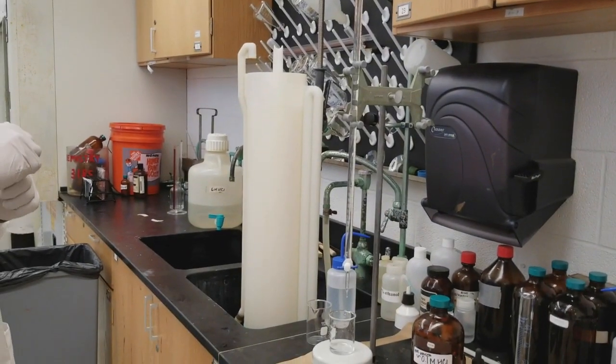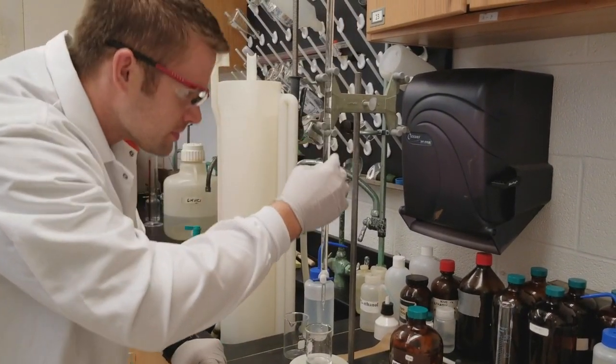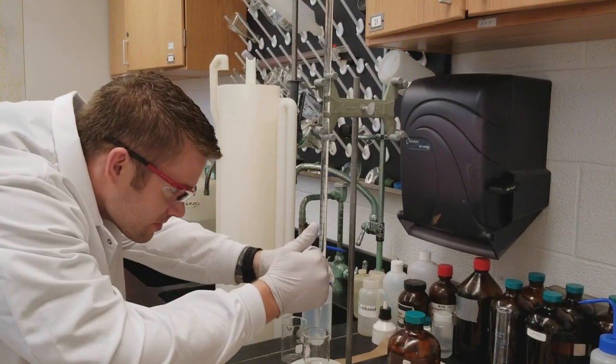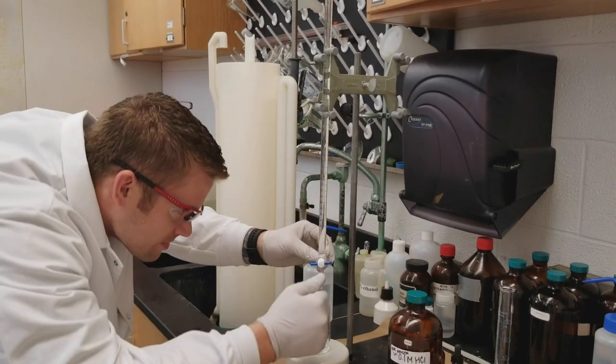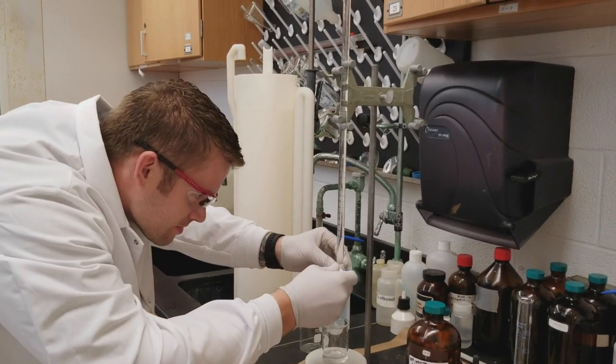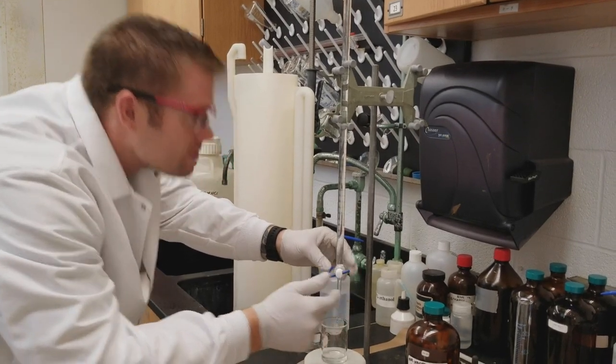And now we want to check the burette for any air bubbles. Those bubbles are going to affect our potential measurements, so we want to check and make sure that we don't have any air bubbles in here. If you do have an air bubble, you can just tap the side of your burette and the air bubble will usually work its way up.